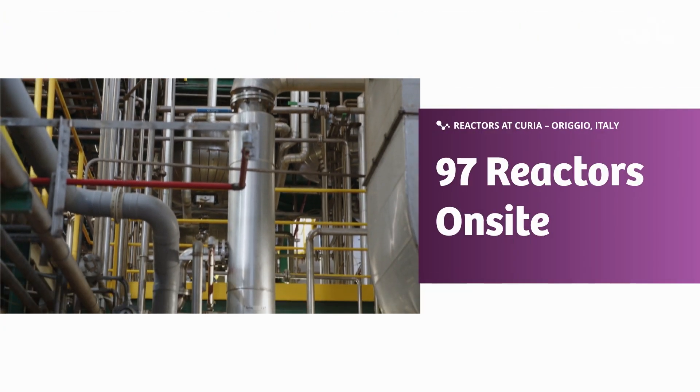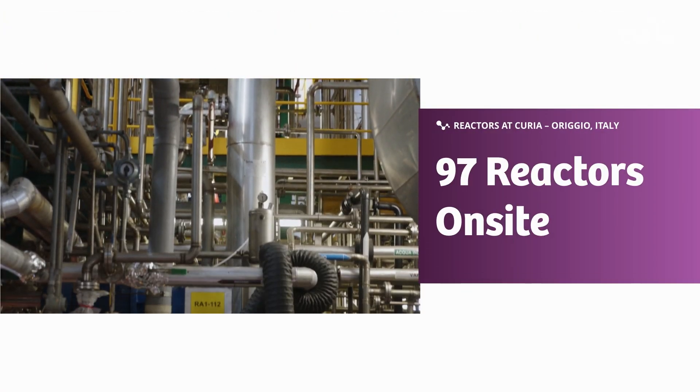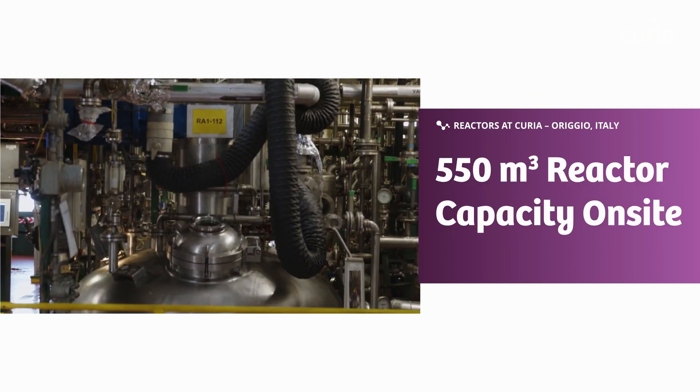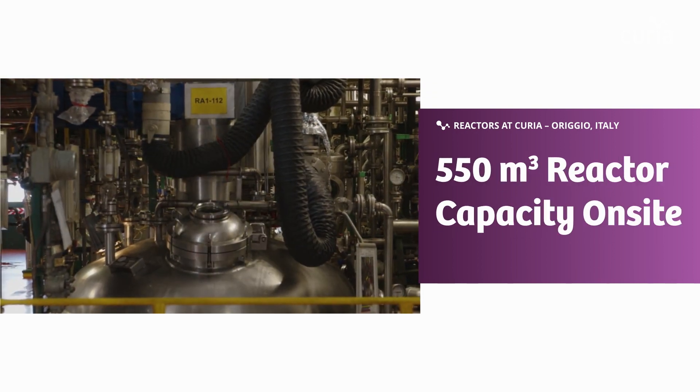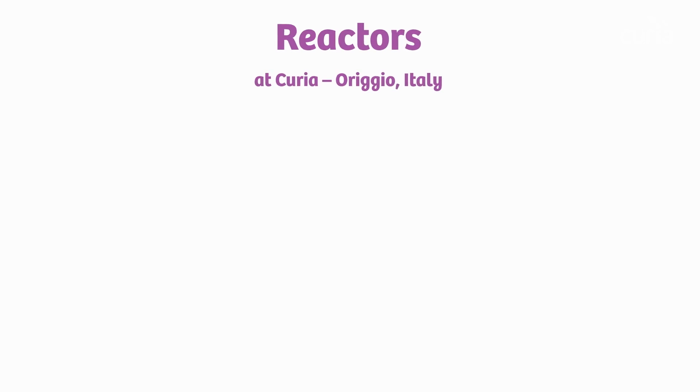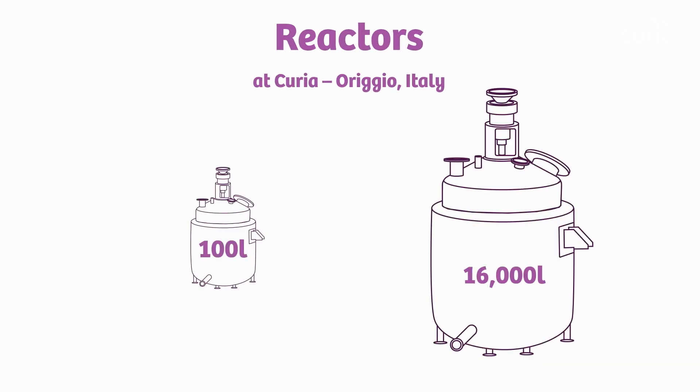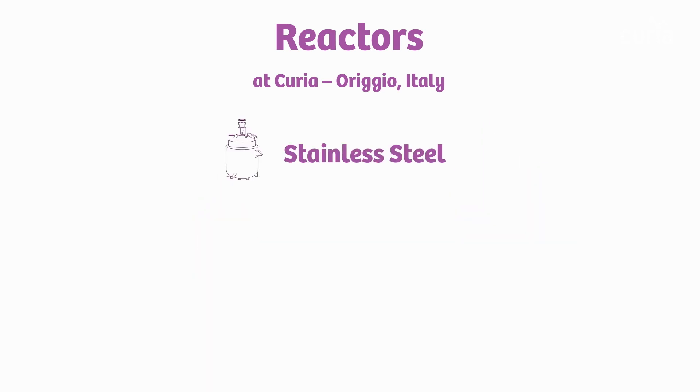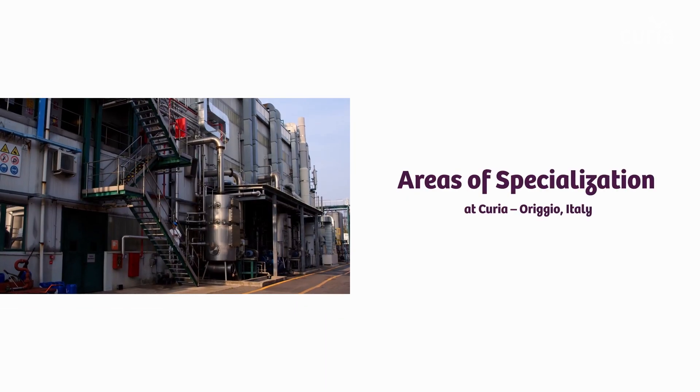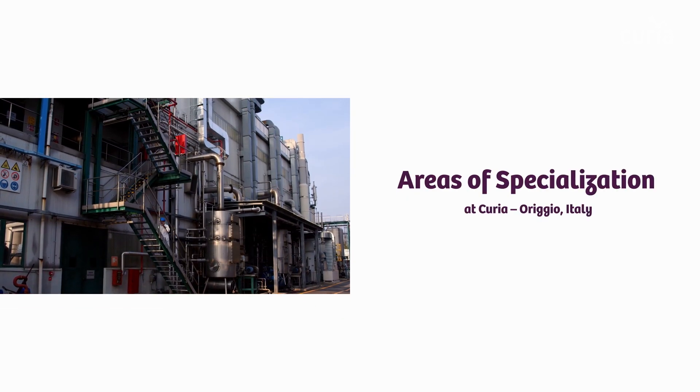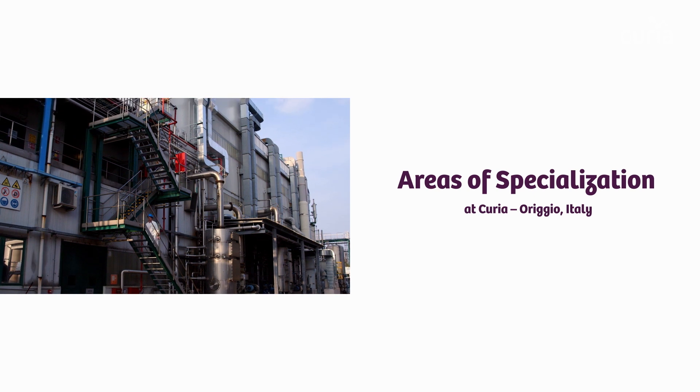The site has 97 reactors. Total reactor capacity is 550 cubic meters. Individual reactor volumes range from 100 liters to 16,000 liters. Reactors are available in stainless steel, glass-lined steel, and Hastelloy C22. The site also offers specialized reactors to support cryogenic and hydrogenation reactions.